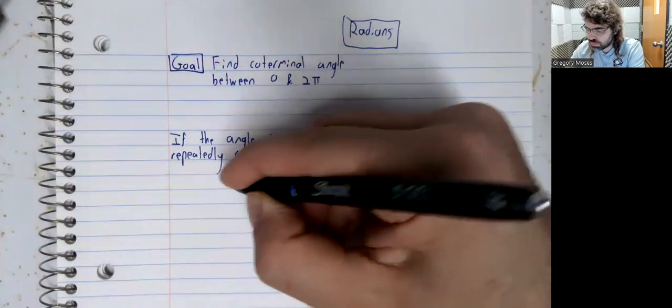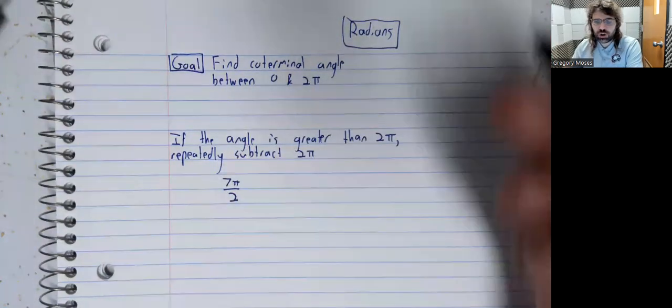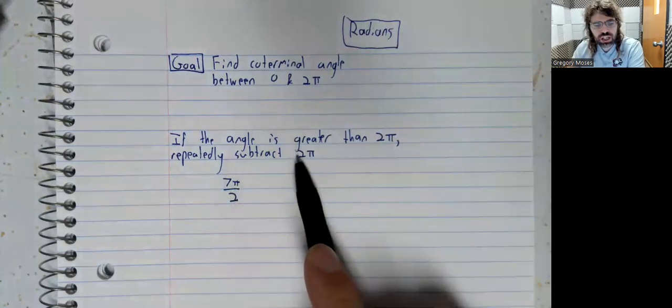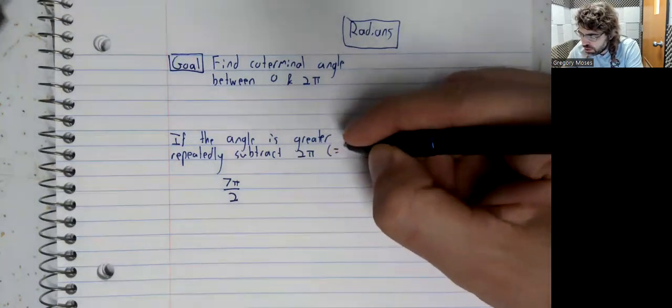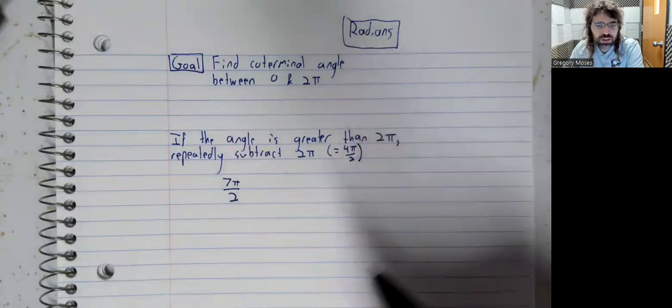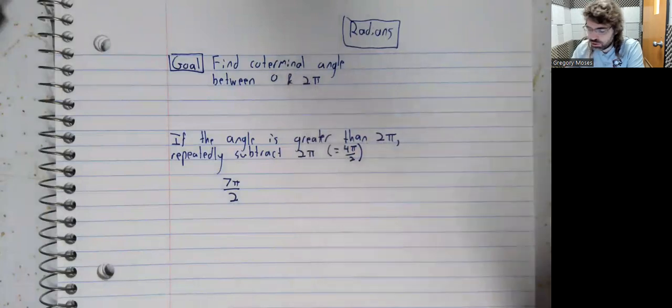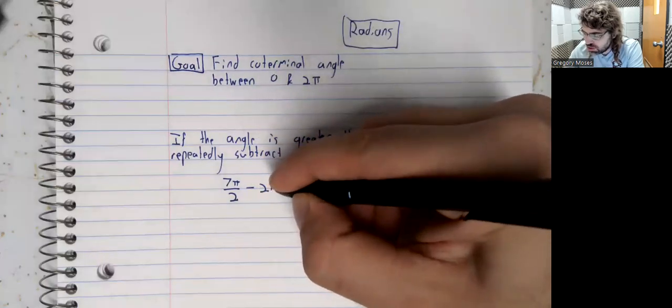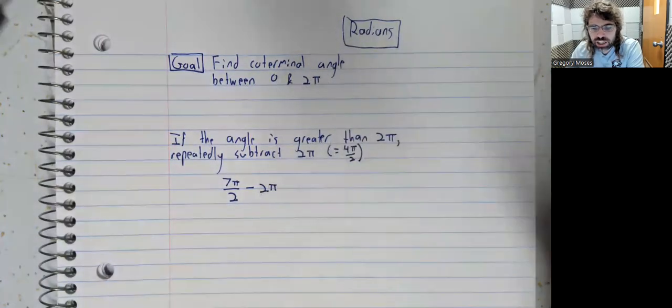So like 7 pi over 2. Here's an angle that's greater than 2 pi. 2 pi being 4 pi over 2. If we want to find a coterminal angle between zero and 2 pi, we repeatedly subtract 2 pi until we get into this range.